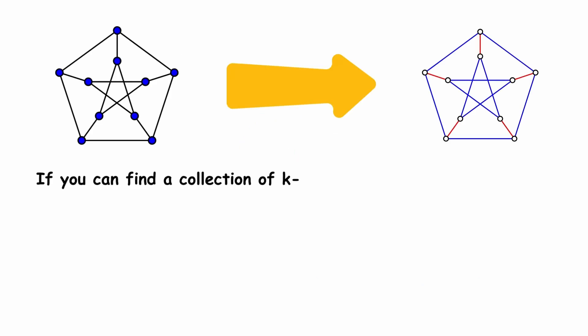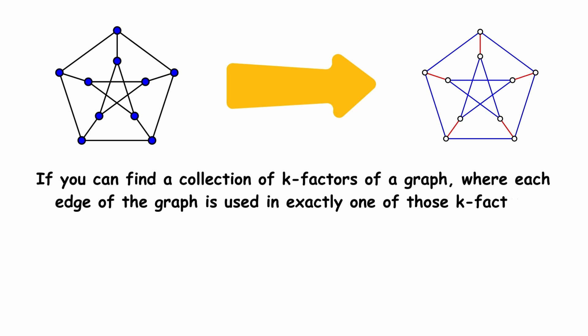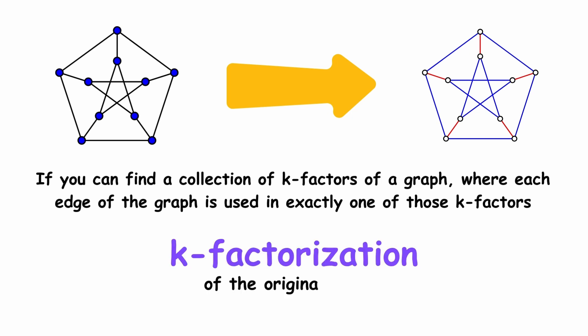If you can find a collection of k-factors of a graph, where each edge of the graph is used in exactly one of these k-factors, then you have a k-factorization of the original graph.